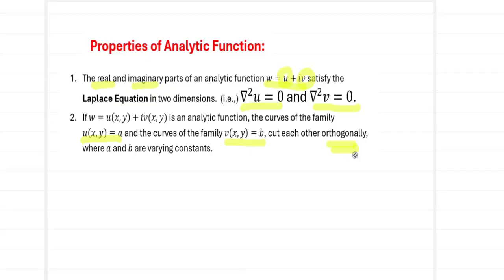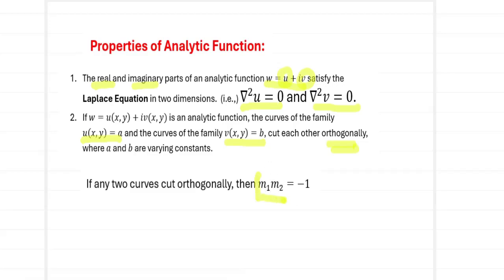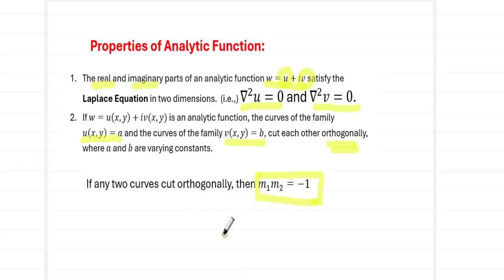Orthogonally means the curves are perpendicular to one another. The condition for orthogonality is that the product of slopes m1·m2 must equal −1. So if the slopes of the curves u = a and v = b satisfy this, the curves cut each other at 90 degrees. These are the two properties of analytic functions.